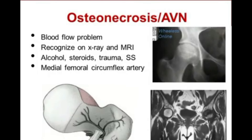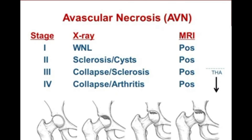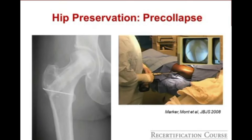Touching on young adult hip pathologies: osteonecrosis is a blood flow problem. Associations include alcohol, steroids, trauma, and sickle cell disease. The medial femoral circumflex artery is the main blood supply to the adult femoral head. When you reach stage 3 disease, involving articular surface collapse or imminent collapse through the crescent sign, total hip arthroplasty is the treatment. Do not choose any hip preservation option for stage 3 disease or more. Hip preservation — whether free vascularized fibular graft or core decompression — is reserved for pre-collapsed disease.